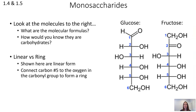Let's take a closer look at the monomers of carbohydrates, which are called monosaccharides. Here are two examples: glucose and fructose. The molecular formula of both glucose and fructose is C6H12O6. Because they have the same molecular formula but different structures, that makes these two molecules isomers of one another.